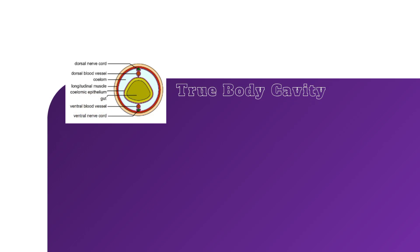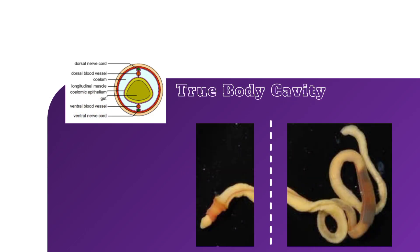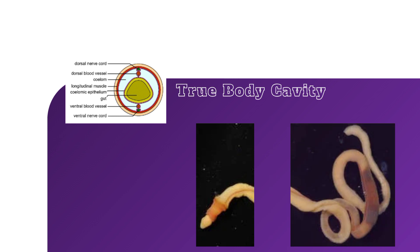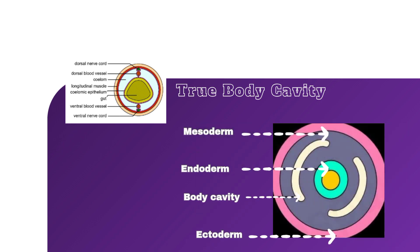Its body shows true body cavity, which means its body shows the presence of a body cavity that is empty space within the mesoderm. This empty space can be filled with coelomic fluid or can accommodate various organs, blood vessels, and corresponding nerves.